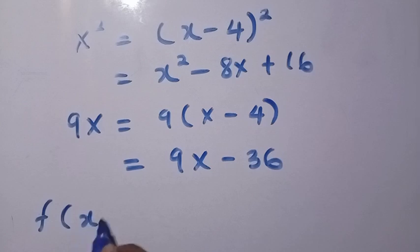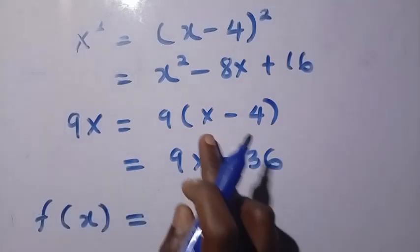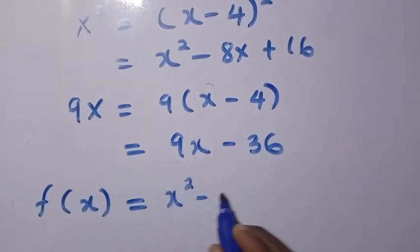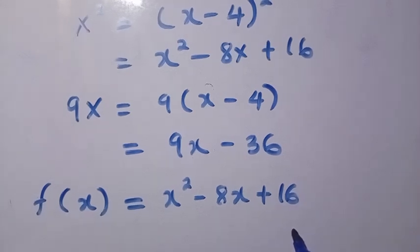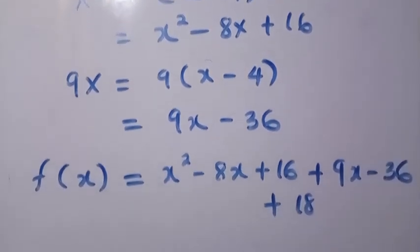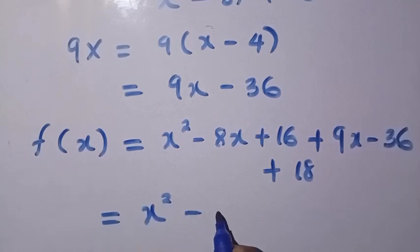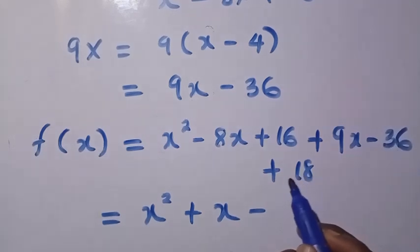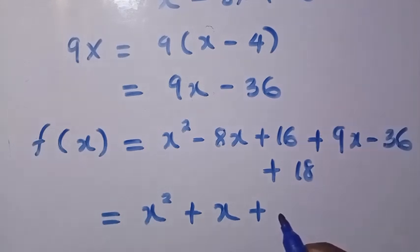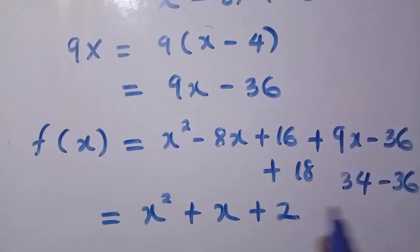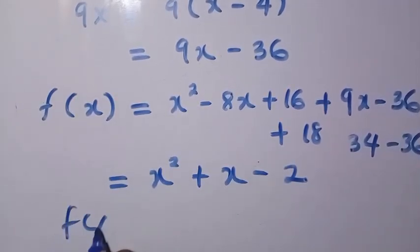Let's come back and replace everything. Therefore f(x+4) changes to f(x) equals x² - 8x + 16 + 9x - 36 + 18. We solve this further: x² + (-8 + 9)x gives us x² + x, and 16 - 36 + 18 equals -2. Therefore we replace f(x) as x² + x - 2. So we've got the same answer using a different approach.